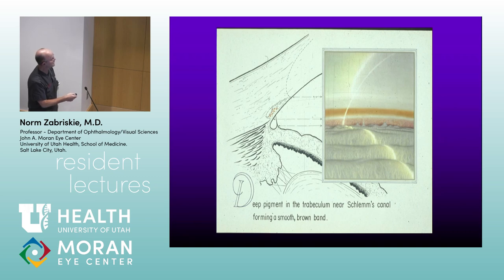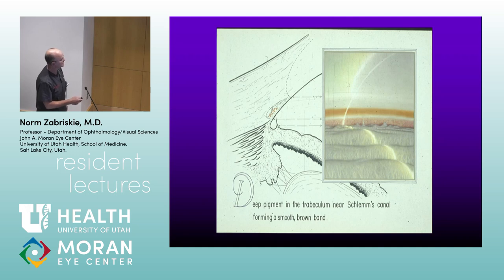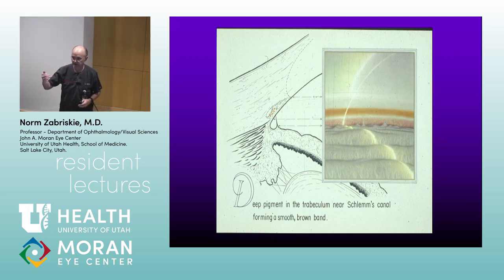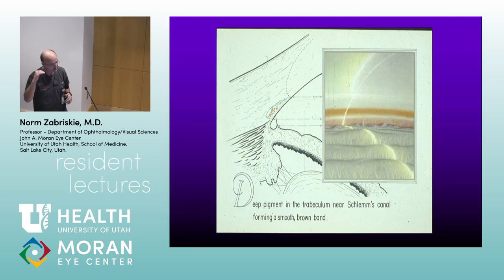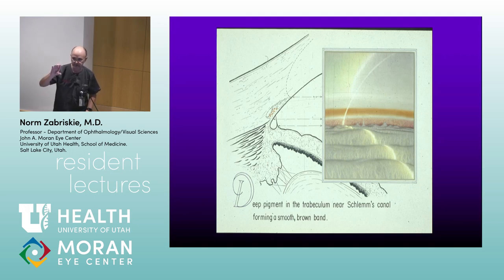In a closed angle, the two lines of the corneal wedge never meet — they just dive down into the angle — and any pigment you're seeing is Sampaolesi line. After the corneal wedge, the next structures are the trabecular meshwork: anteriorly the non-pigmented TM, posteriorly the pigmented TM. The pigmented TM is your target zone for procedures like laser trabeculoplasty. Then comes the scleral spur.